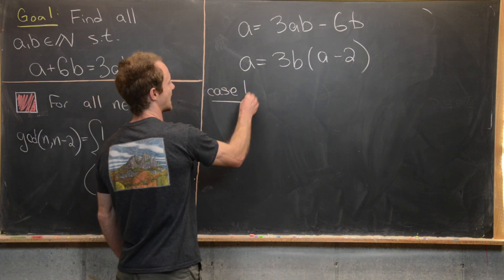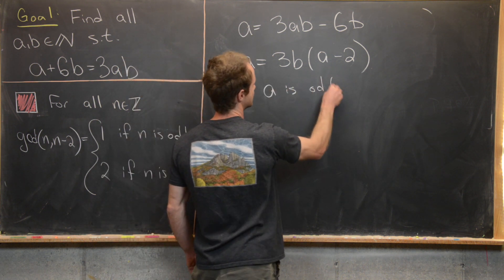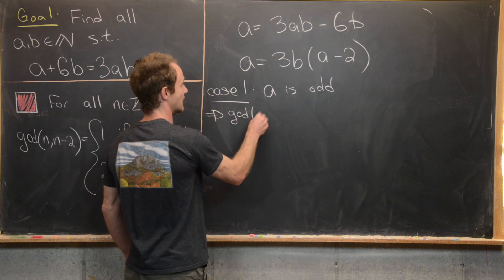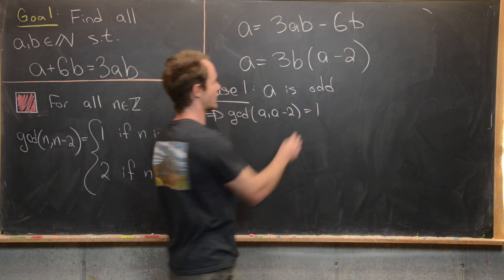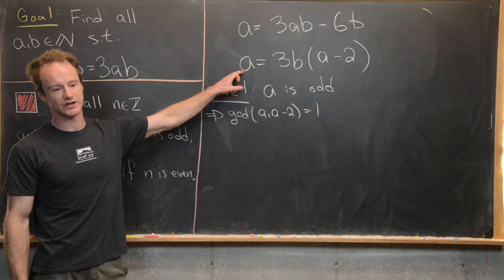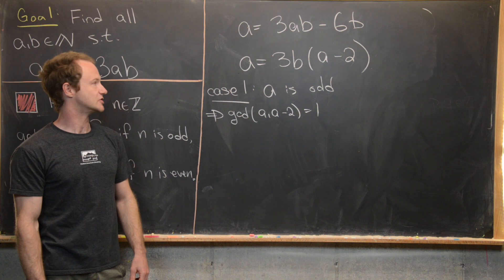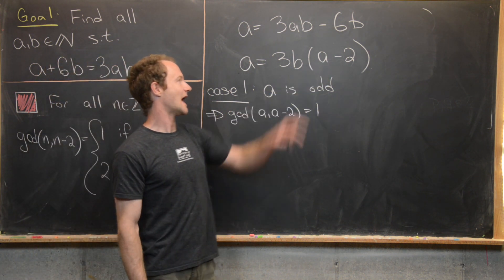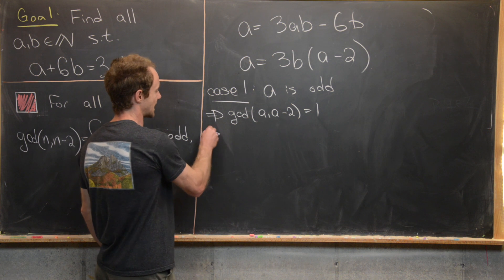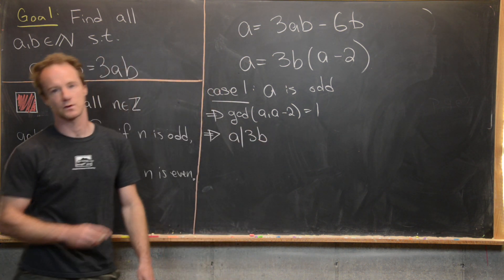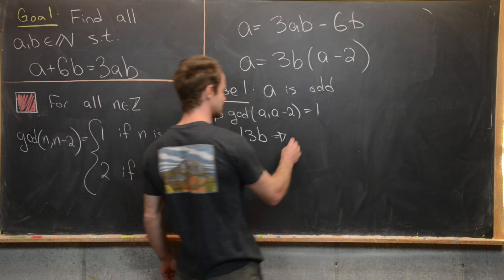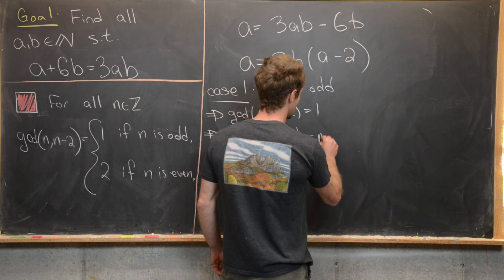Case 1: A is odd. If A is odd, just like we showed, the GCD of A and A minus 2 is 1 — in other words, these are coprime. Since A divides the left-hand side of the equation, A must divide the right-hand side. But because A and A minus 2 are coprime, A cannot divide A minus 2, which means A must divide 3B. So that gives us A divides 3B.